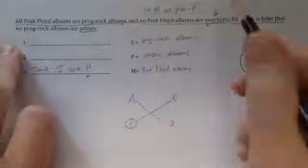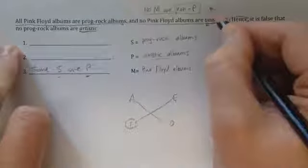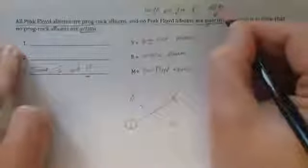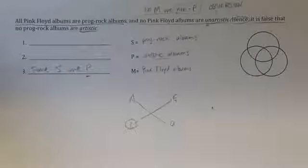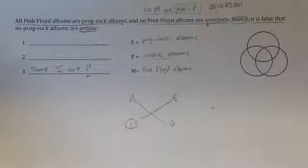Now, we can do so using the operation that we called obversion. When we obvert a proposition, we change the quality of the proposition, so whether it is affirmative or negative, without changing the quantity. And then we replace the predicate term with its term complement. That's exactly what we need. We need to replace non-P with P.